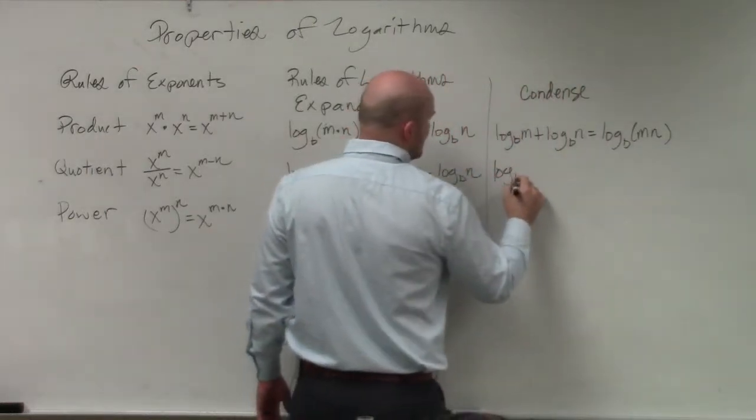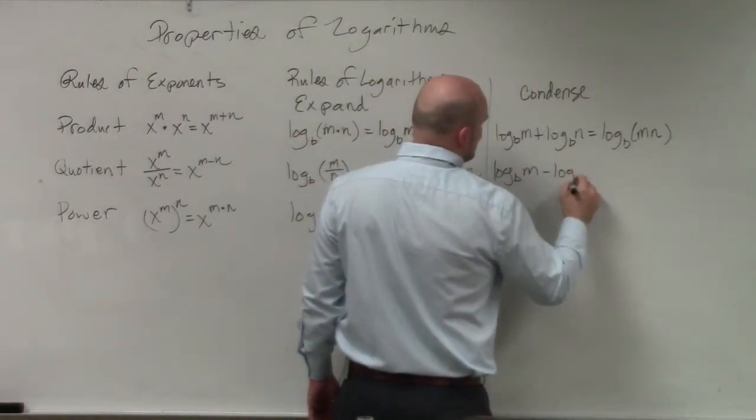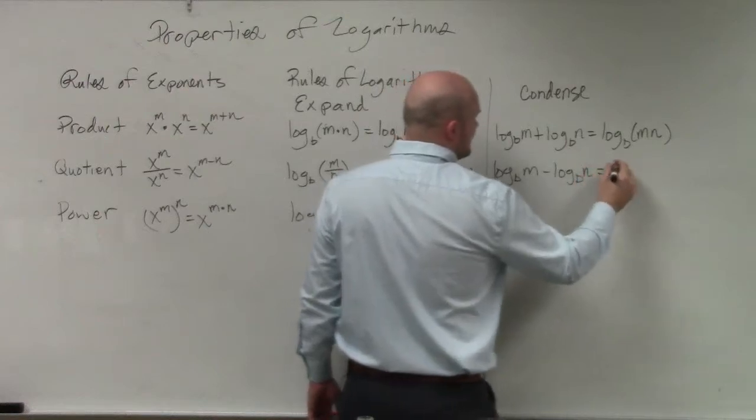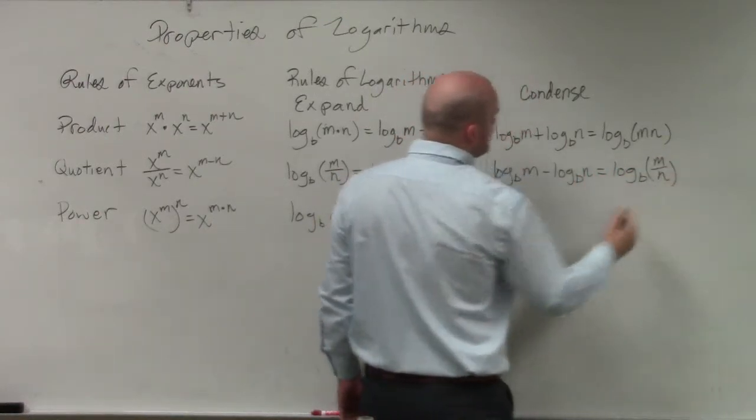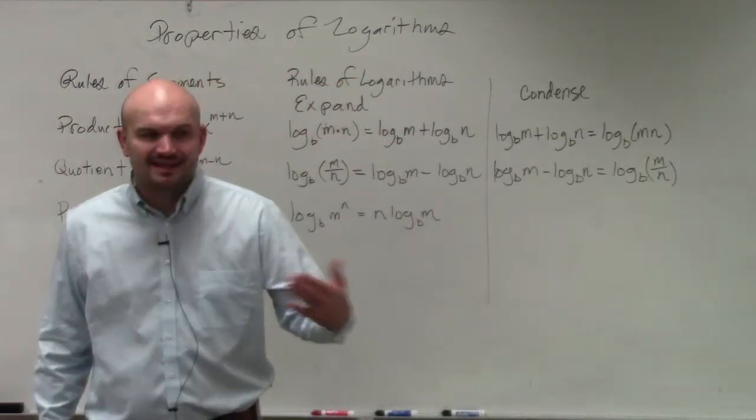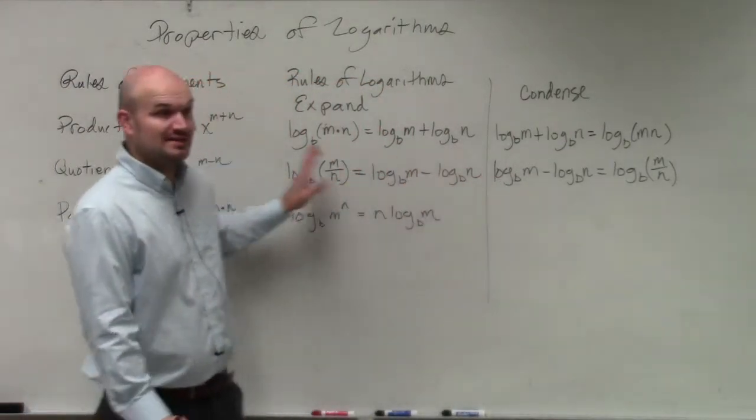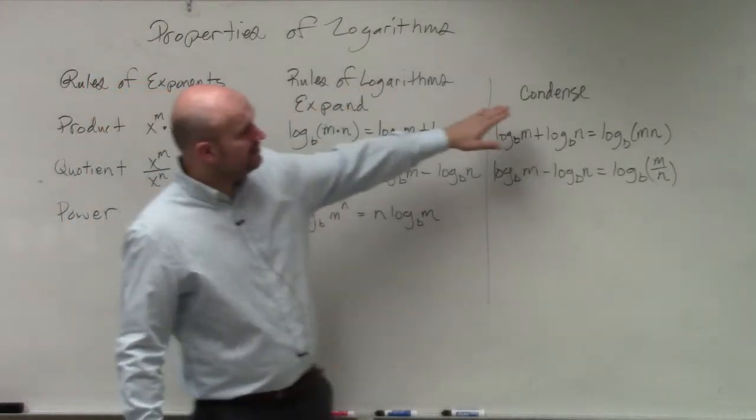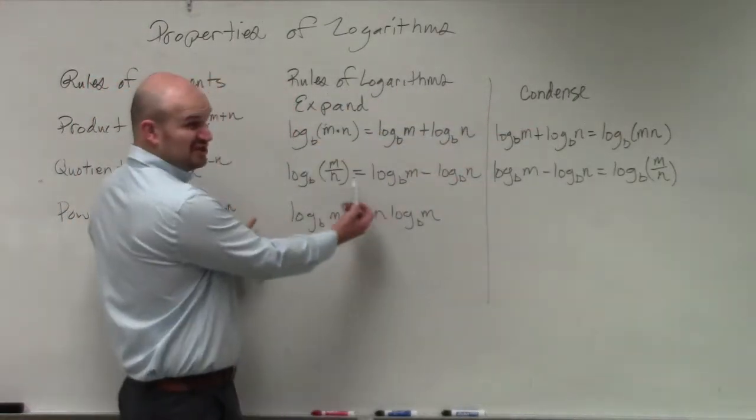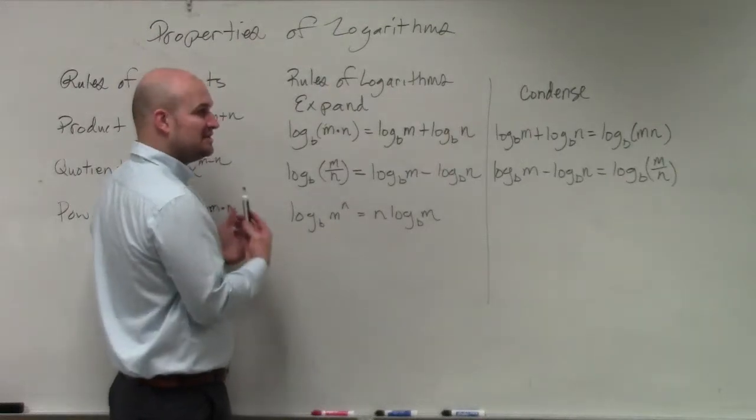If you have log base b of m minus log base b of n, that equals log base b of m over n. And then, last but not least, all I'm doing is rewriting these the other way. There are basically two different ways that we look at: expanding or condensing. All I'm really doing is rewriting the exact same form. But I want you guys to understand...